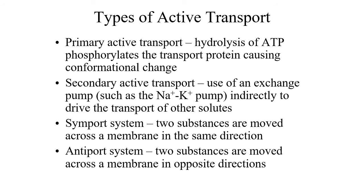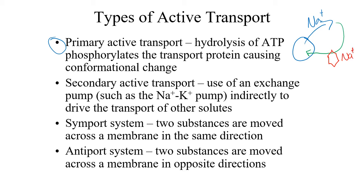Types of active transport: the sodium-potassium pump is a primary active transport where ATP is hydrolyzed into ADP and inorganic phosphate. Since the pump moves sodium outside the cell, that sodium wants to come back in. If we have another substance like glucose that also needs to come in, we can use a sodium-glucose transporter to bring both into the cell — this is secondary active transport, using the sodium gradient already established.